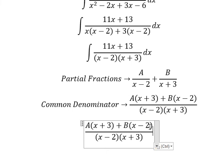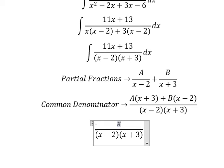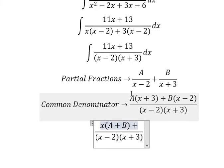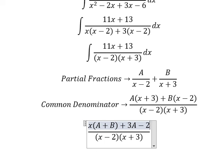Now we arrange based on the terms of x. For the x term, we have A+B. For the constant term, 3 multiplied by A gives 3A, and negative 2 multiplied by B gives negative 2B.